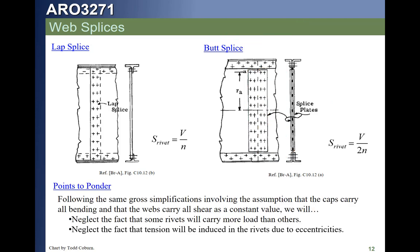Worth noting: the load really won't distribute that evenly initially — it will tend to peak up at the first fastener, as we saw when we studied shear on fasteners. We're going to neglect that. What happens is if it does start to peak, often that rivet will yield a little and then share the load. This also neglects eccentricities due to the moment caused when transferring load — and we ignore the moment associated with these fastened webs whenever the webs are thin.